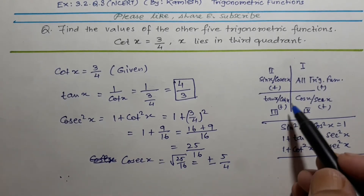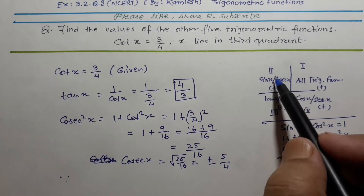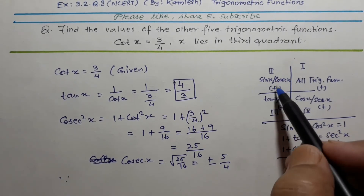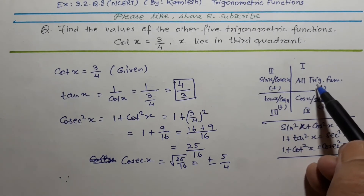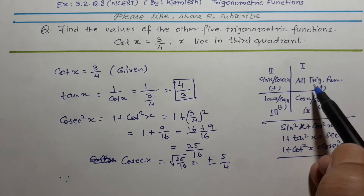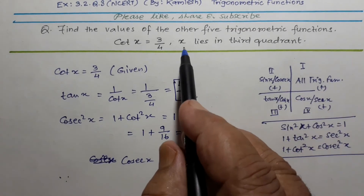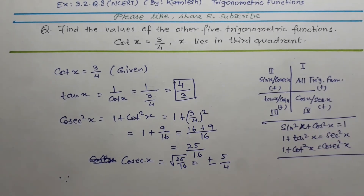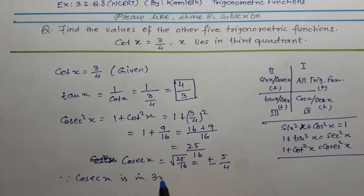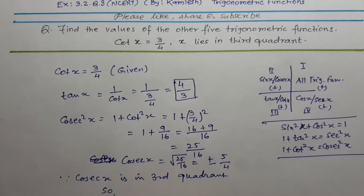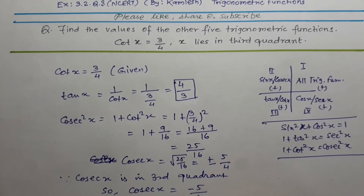Since cosec is positive only in the first and second quadrants, and in the question x lies in the third quadrant, cosec x will be negative. Therefore, cosec x = −5/4.